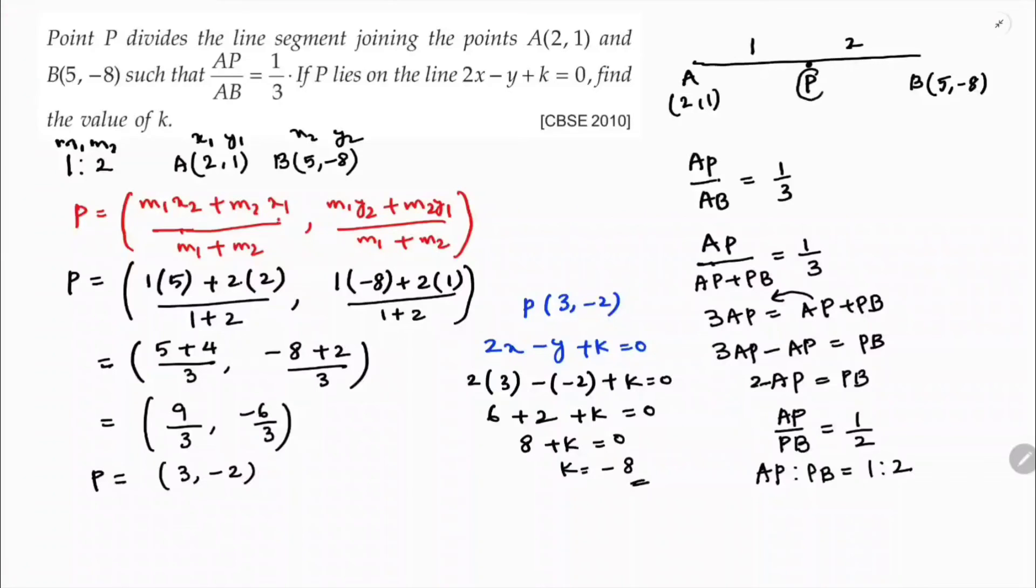First find P with the help of the ratio and that point P is substituted in the given line. You will get the value of k.